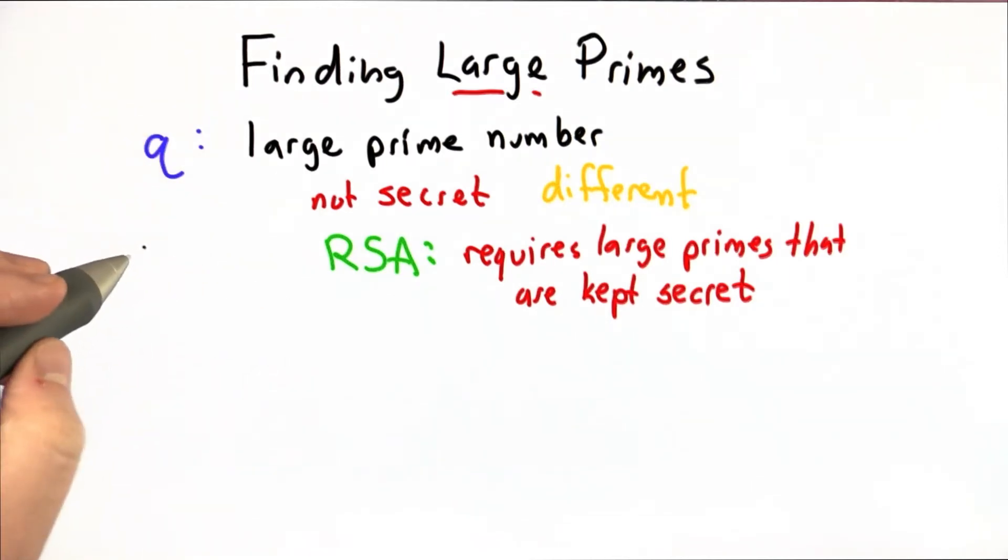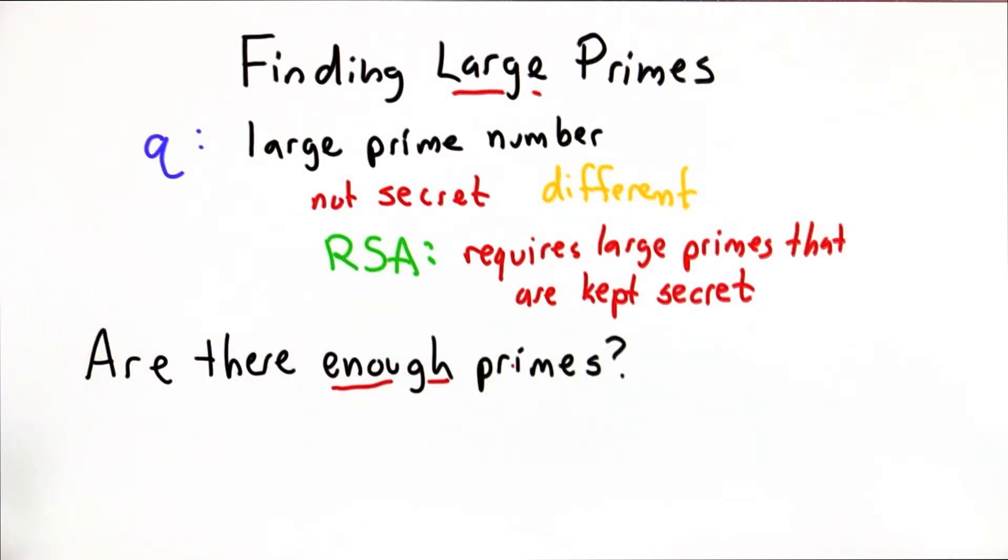So both of these cryptosystems depend on finding large prime numbers. So the first question we should ask is, are there enough prime numbers that we can always find a new one when we need one?